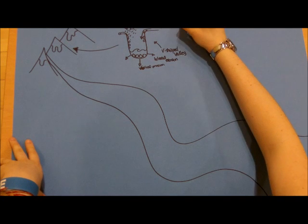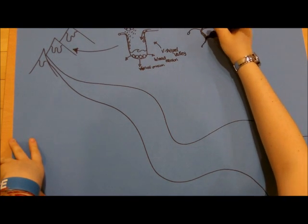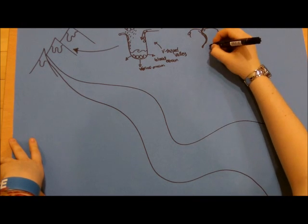Closer to the source, a river usually follows quite a straight course, but soon they begin to bend and wind around obstructions in their path, forming chains of interlocking spurs.